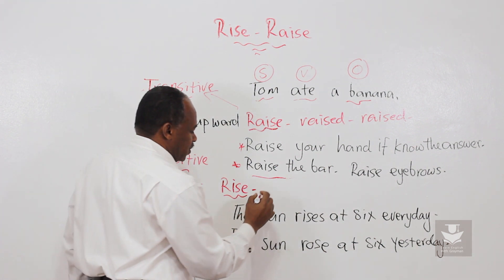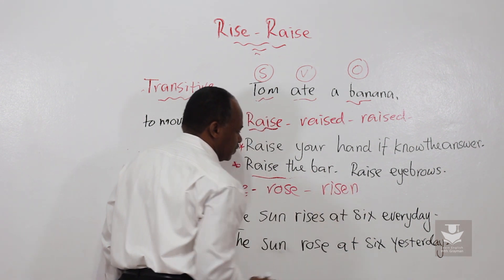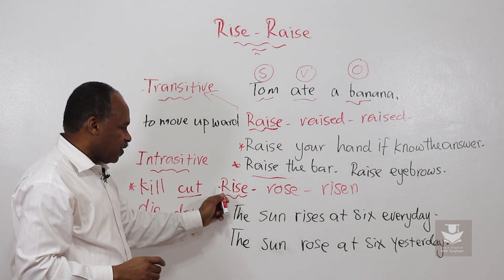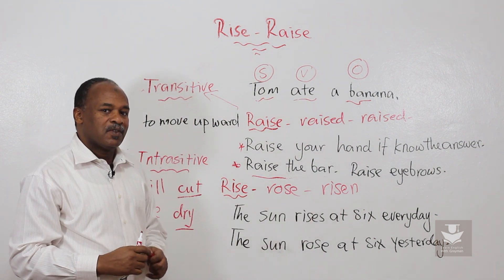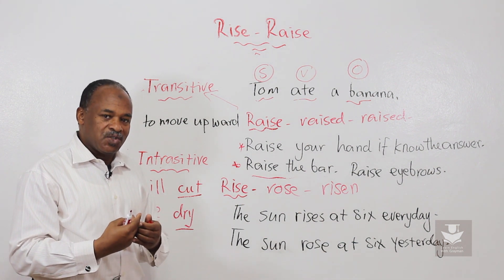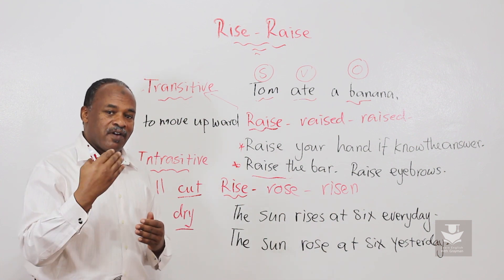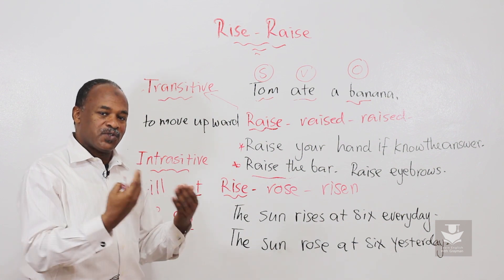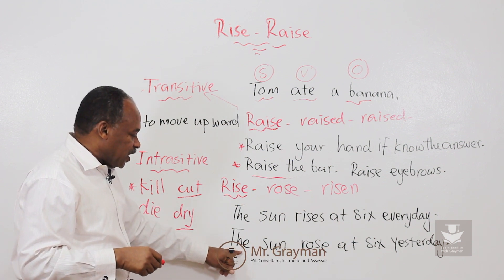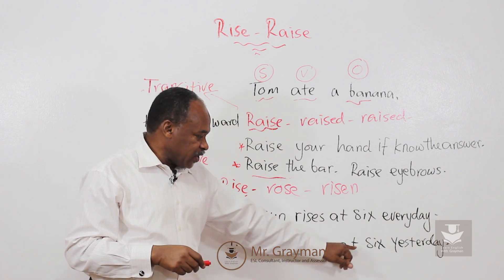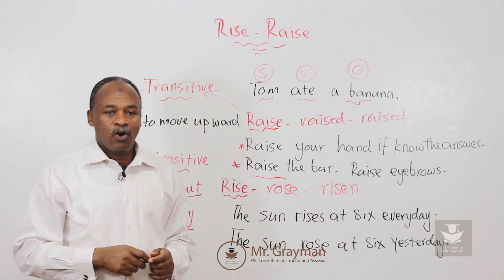The past is 'rose' and the past participle is 'risen.' So: rise, rose, risen. We say 'every day the sun rises at six.' The sun rises by itself — of course there is a force behind that, but that's what appears to us. Then we say 'the sun rose at six yesterday' — so that is the past. I hope you enjoyed today's video.